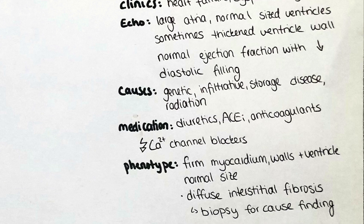It can be idiopathic in origin or due to radiation fibrosis, amyloidosis, sarcoidosis, metastatic tumours, or inborn errors of metabolism. The myocardium is firm but the size and thickness of the chambers is normal. Histologically, we can observe a patchy or diffuse interstitial fibrosis, and biopsy can reveal disease-specific clues like signs for amyloidosis or sarcoidosis.